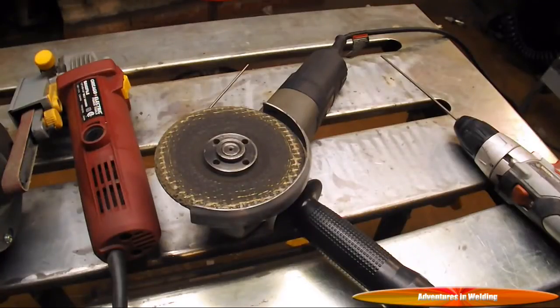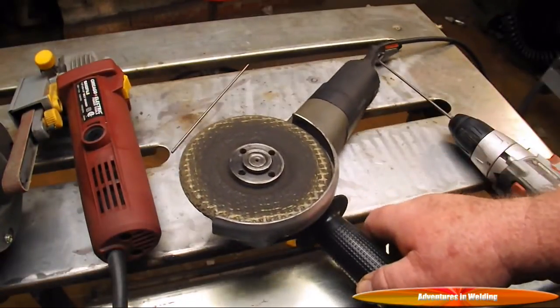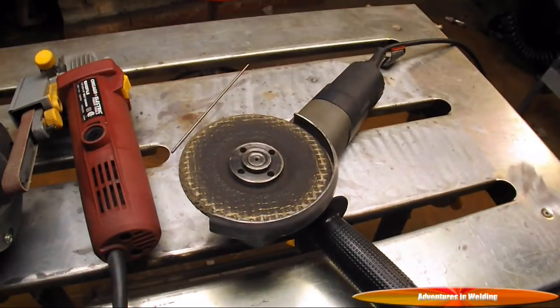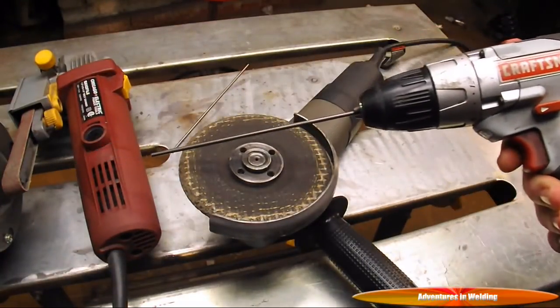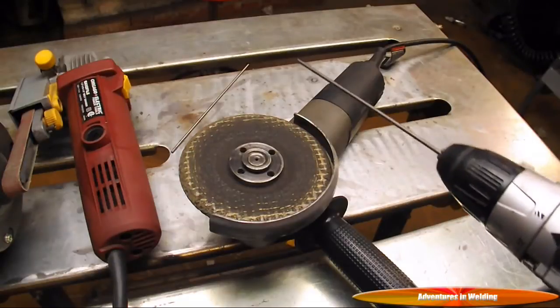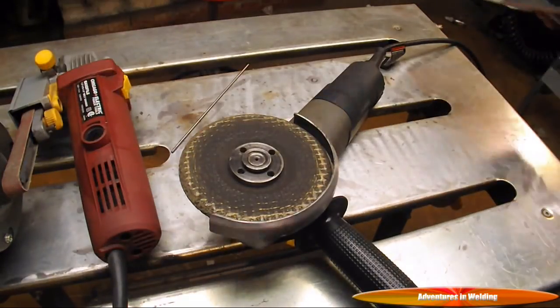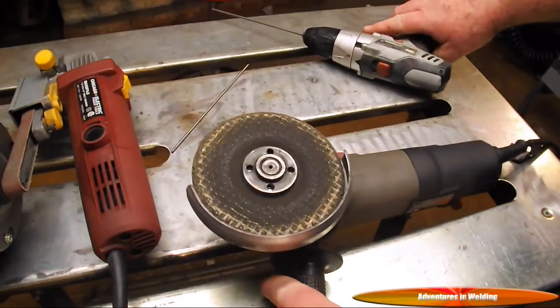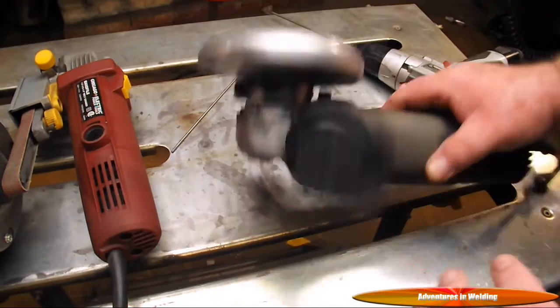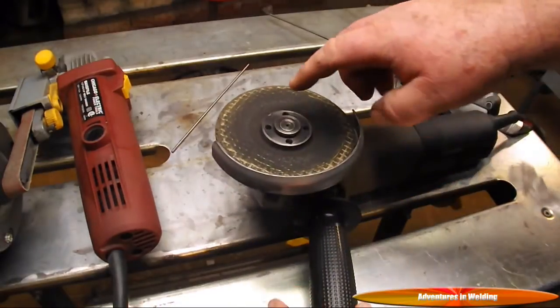All right, on to some grinding technique. All right folks, the first method we're going to talk about using is your basic four and a half inch grinder. Now regardless of which method you use, you're going to find things go a whole lot easier if you chuck your electrode up in a drill. I like mine on high speed, and here we go.